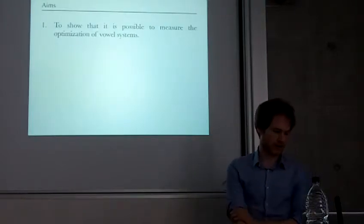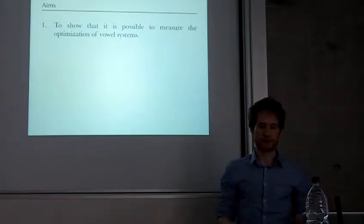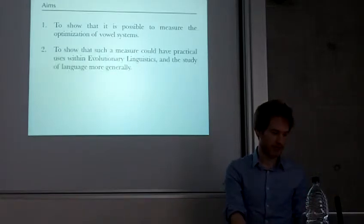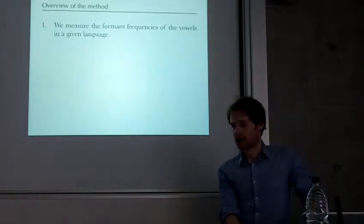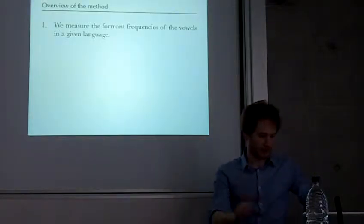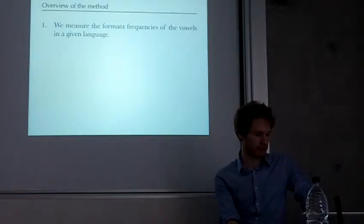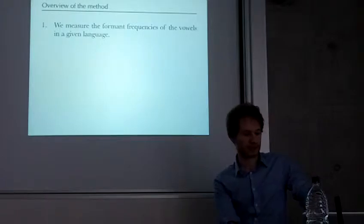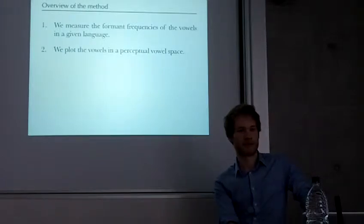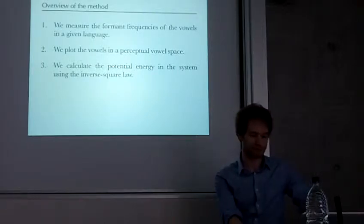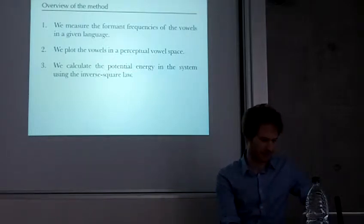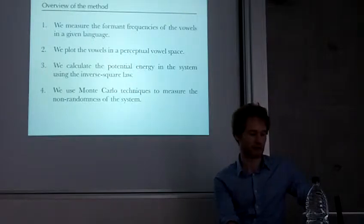The aims of this research was to show that it's possible to measure the optimization of vowel systems - take a set of vowels and change it into a single number that says this is how organized the system is, and to show that it could have practical uses within evolutionary linguistics. I'm going to quickly outline how the method works in four steps and then go into more detail. We start out by measuring the formant frequencies of the vowels in a particular language, then we plot the vowels in a perceptual vowel space, then we calculate the potential energy in the system using the inverse square law from theoretical physics, which is arguably not necessarily applicable to language but seems to work. And then finally, Monte Carlo techniques to measure the non-randomness of the system.